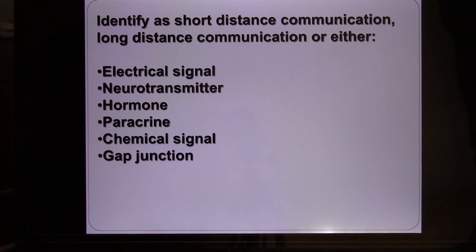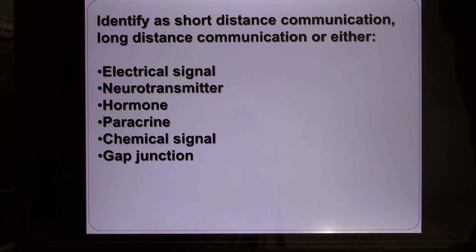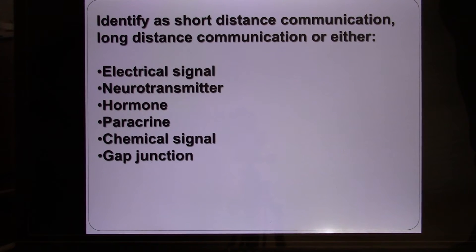Of the three kinds of junctions, the gap junction's main function is not to pin cells together, but to provide an opening. They're like ion channels, but they are always open. So they provide an opening between cells. When the first cell generates an electrical signal or has a chemical signal inside, it can go through the gap junction from cell one to cell two to cell three, so the whole skin works like one unit.